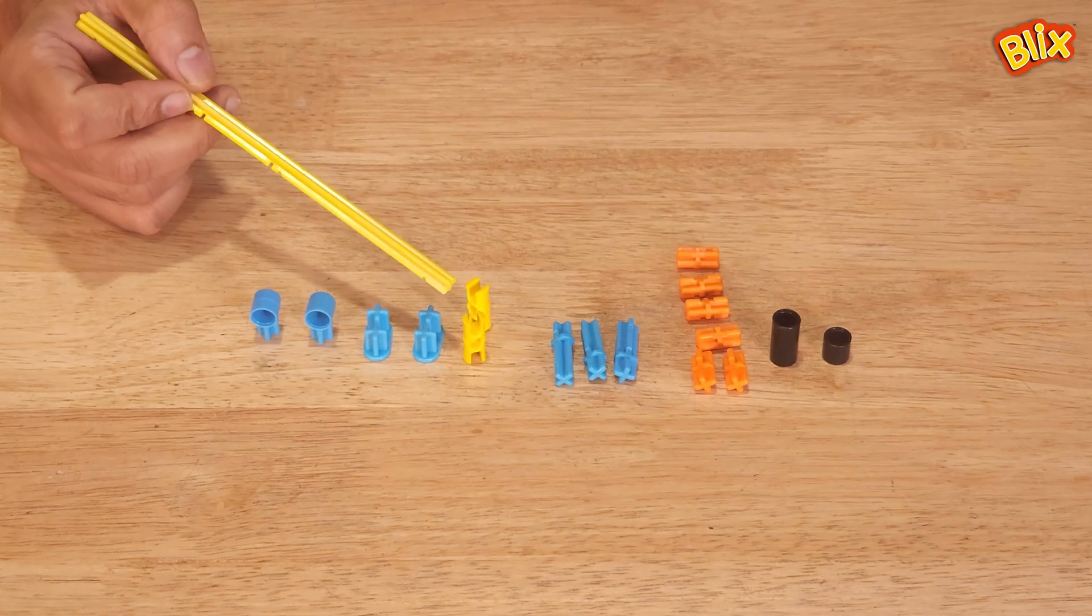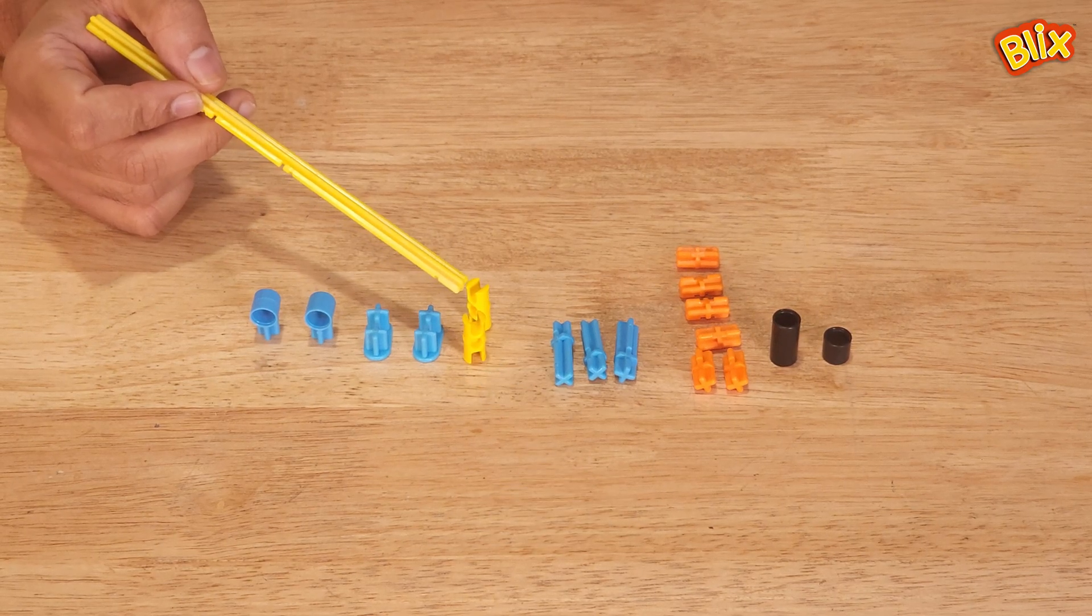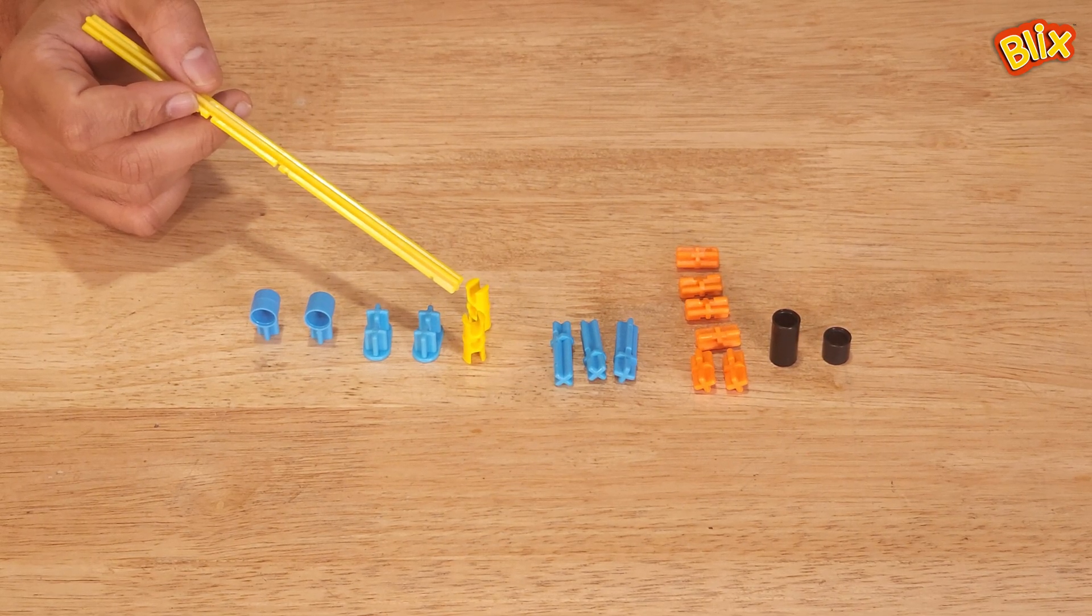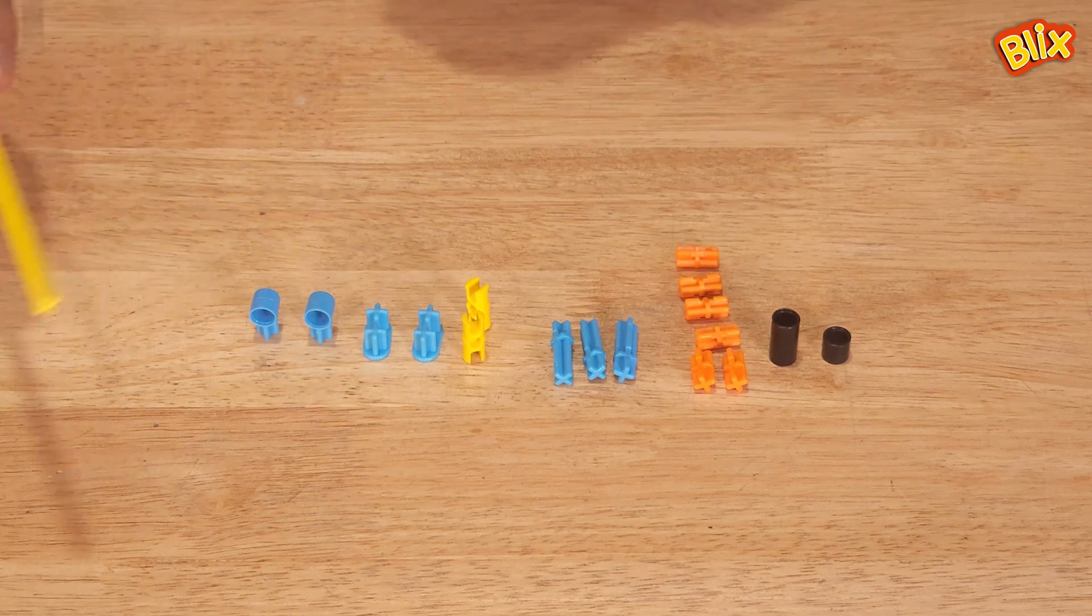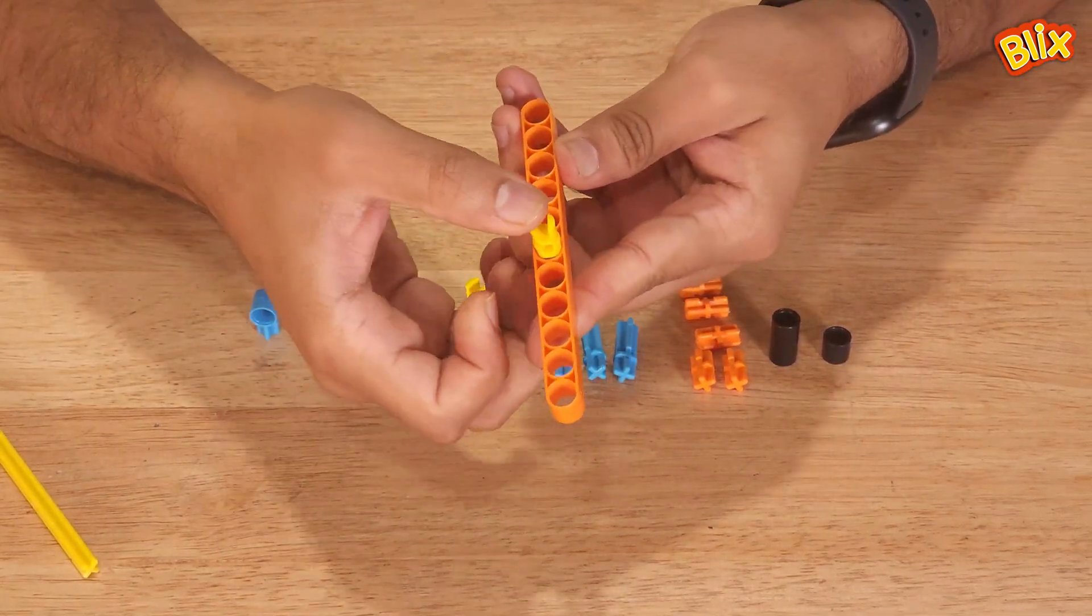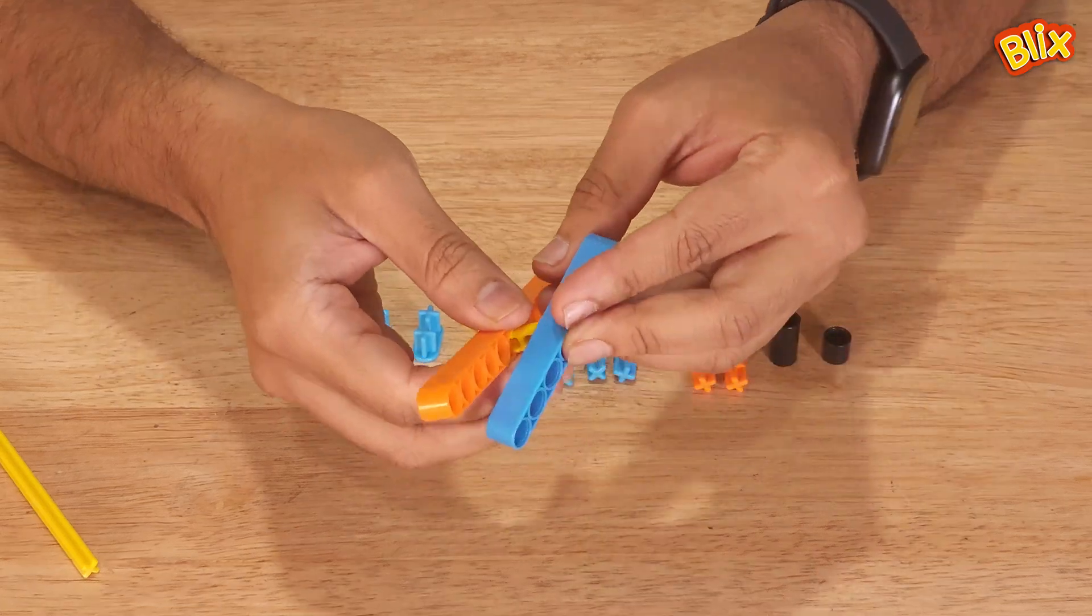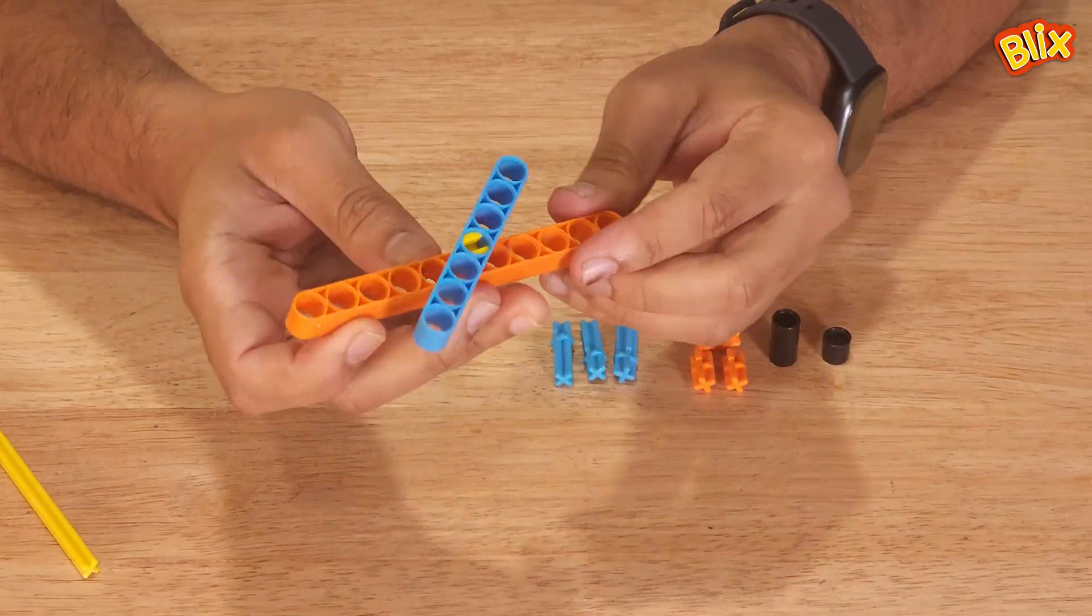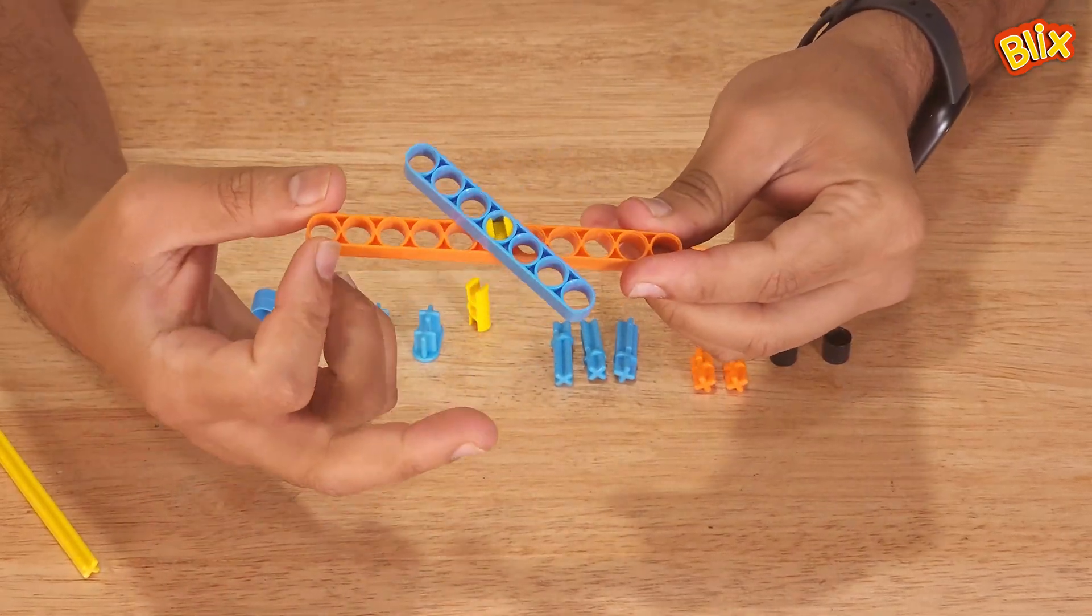The next connector is called CL2. It's a kind of loose connector. Whenever we want relative motion between two pieces, we can use this kind of connector. Now, over here, we have a P11. We place a CL2 like this. And when we connect another piece, both these pieces will have relative motion.